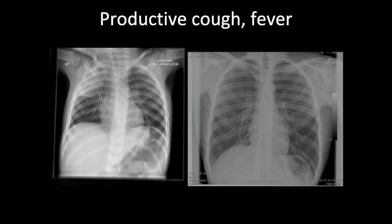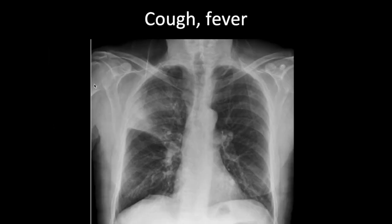This child has consolidation in the upper lobe of the right lung. There are no lung markings in the right upper zone, no air, and no evidence of volume loss — so this is consolidation. You can see an interface here with the horizontal fissure confirming it is in the upper lobe. Here is a small area of consolidation, again in the upper lobe — you can see the horizontal fissure. No lung markings in this area, no air, no volume loss — this is consolidation.